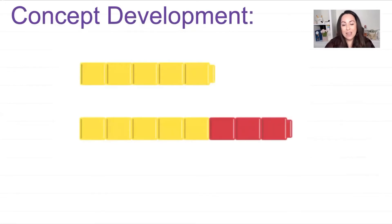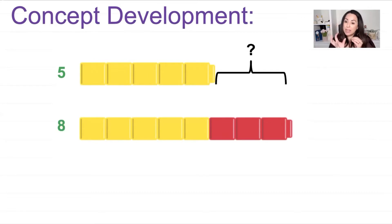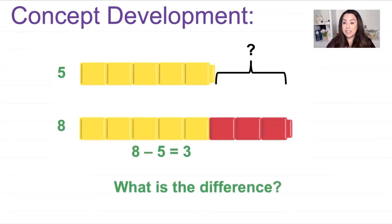Let's step into our concept today. I have some cubes to look at. On the top I have five cubes and on the bottom I have eight cubes. The question is: what is the difference? We can find the difference by finding the extra. Looking at the red cubes, I want to find the extra on the other side. The difference is three. I can use a subtraction sentence: eight take away five is equal to three.